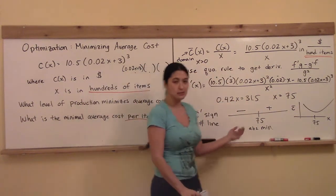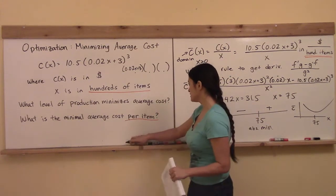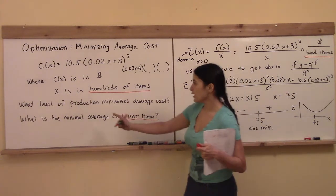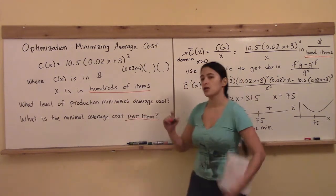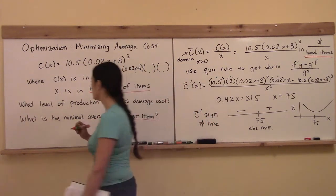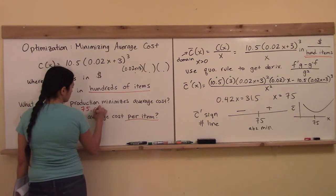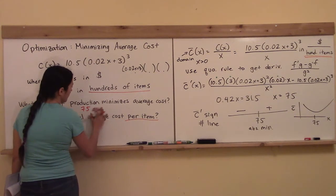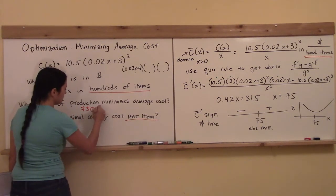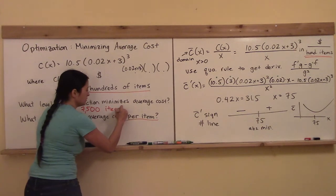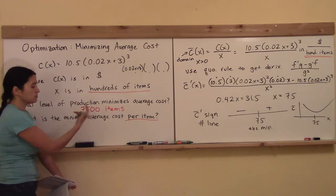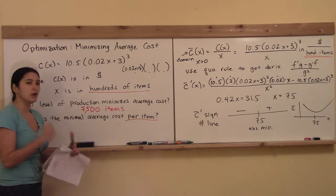The absolute min is located at x = 75. So let's start answering our questions. What level of production minimizes average cost, rounded to the nearest item? 75 items? No — don't forget: x is in hundreds of items, so it's 75 times 100, which is 7,500 items.